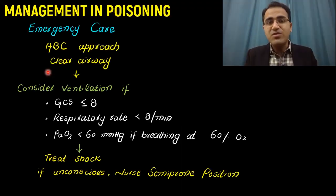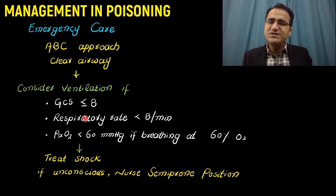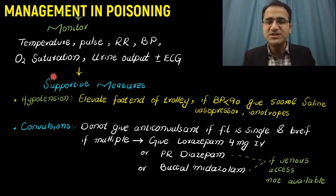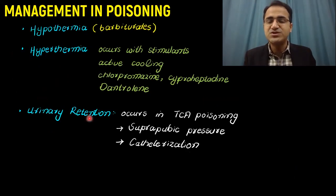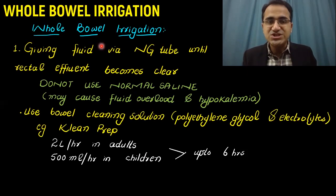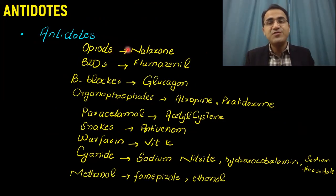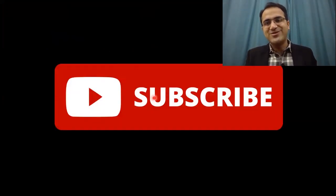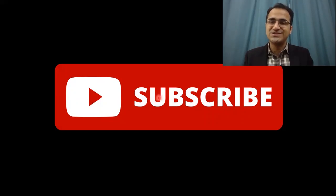In summary, we talked about emergency care of poisoning with the ABC approach and ventilation if GCS is down. You manage the patient, send investigations, monitor and give supportive therapy — controlling convulsions, hypotension, and temperature. We discussed the role of gastric lavage, emetics, activated charcoal, and whole bowel irrigation, and then specific antidotes, lipid emulsification, and insulin therapy. Please click on the subscribe button and check out my other videos on emergency medicine and toxicology. Thank you very much.